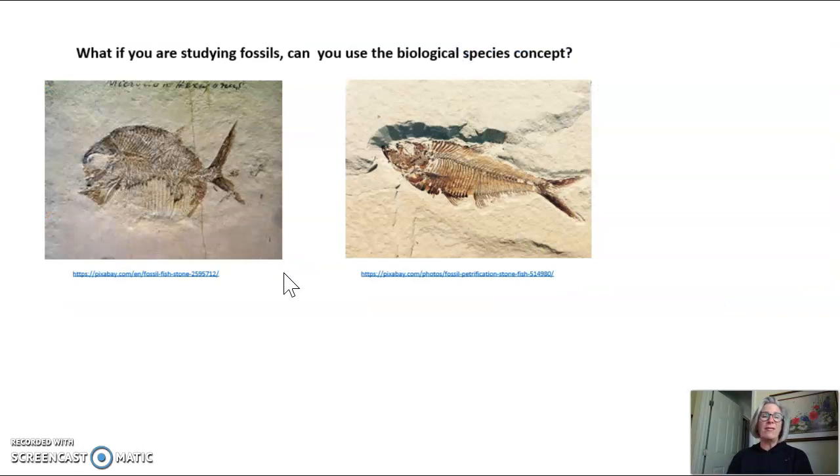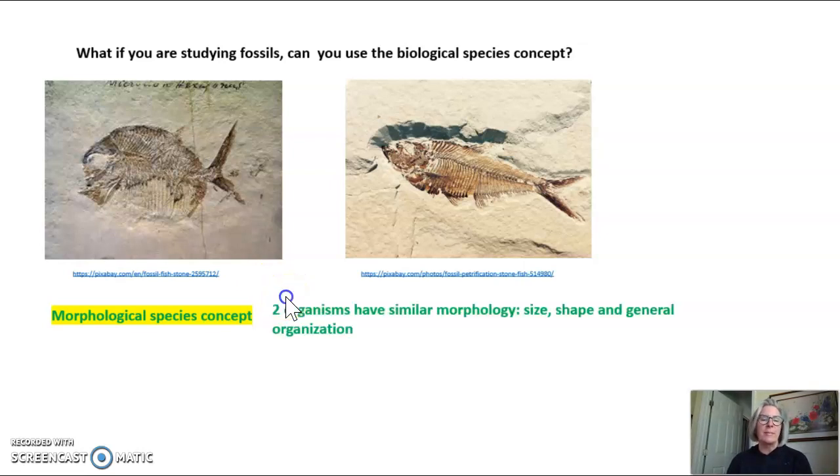But what if you're studying fossils? Can you use the biological species concept to determine if these two fossils are in the same species? In this case, you can't because they're dead. They can't mate. So we use what's called the morphological species concept. In the morphological species concept, two organisms would have similar morphology. Morphology means things like size and shape and general organization. When do we use this definition?